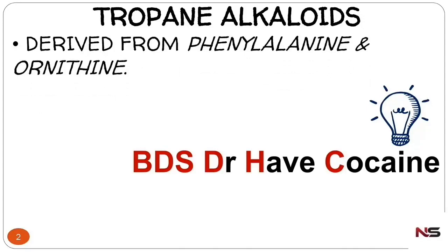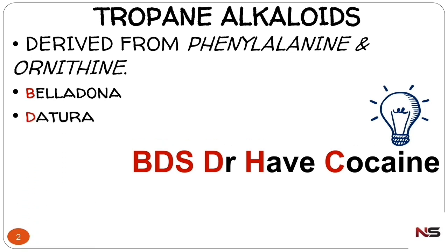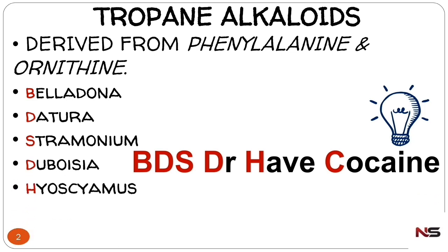Tropene alkaloids are derived from phenylalanine and ornithine. The alkaloids coming under tropene alkaloids are: first, belladonna; second, datura; third, stramonium; fourth, duboisia; fifth, hyoscyamus; and last, coca. These are the drugs coming under tropene alkaloids.